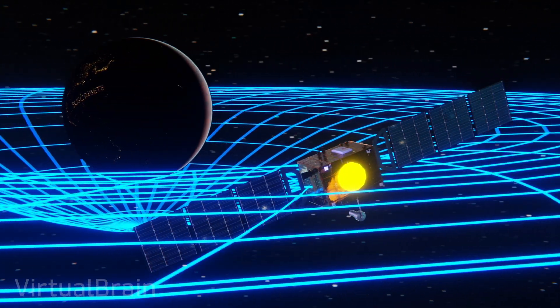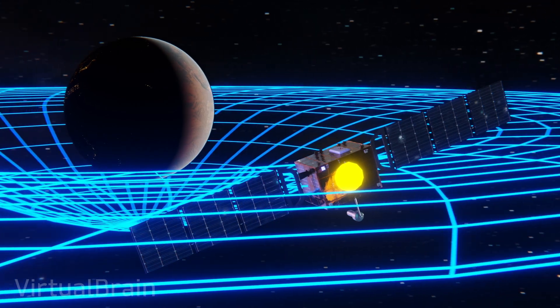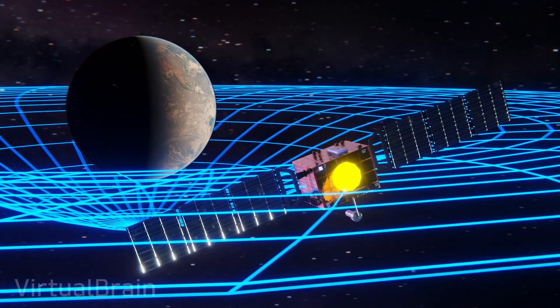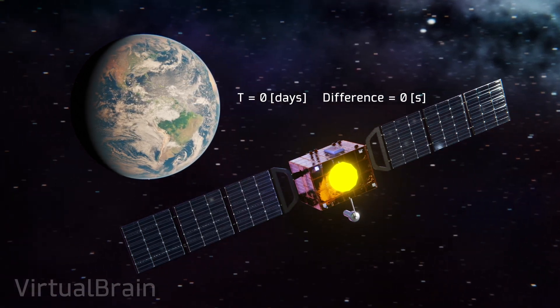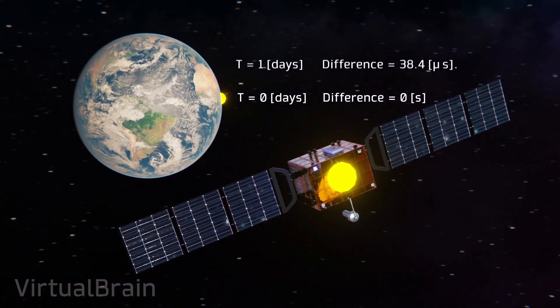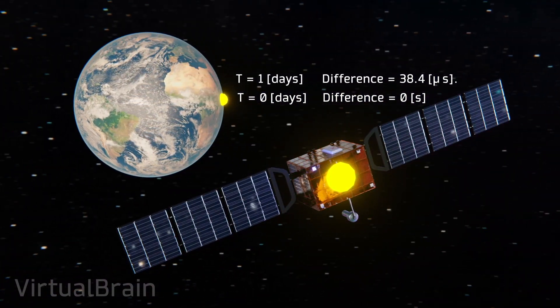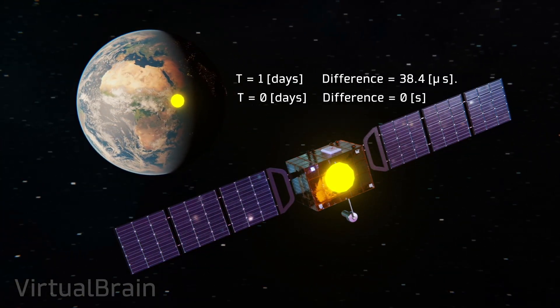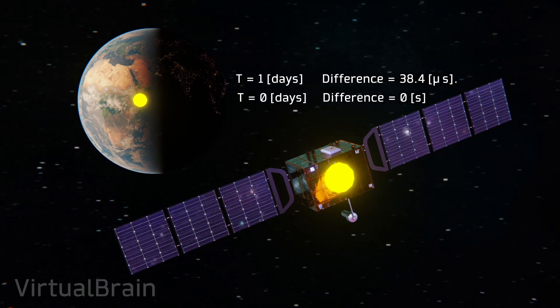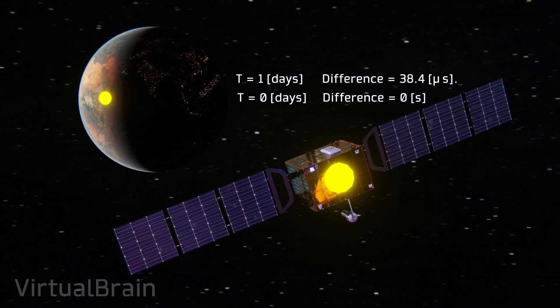More specifically, even if both clocks have started completely synchronized, after only one day there will be a difference of 38.4 microseconds between their values. Such an error in the calculation of the distance between the satellite and the receiver means a difference of several kilometers, and moreover, this error will continue to accumulate as the time passes.